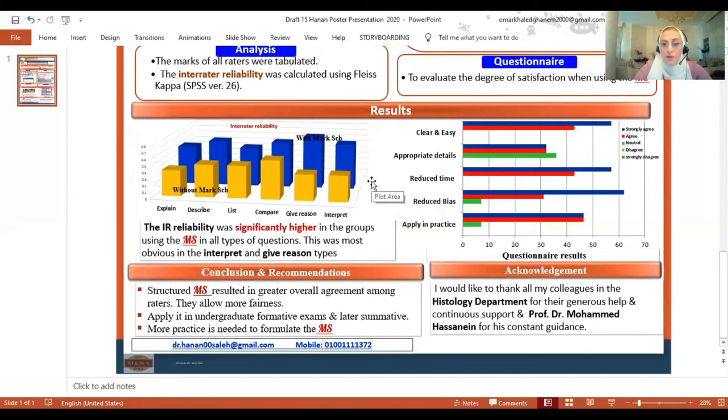As regards the questionnaire, more than 90% of the raters found that the mark scheme was clear and easy and it reduced time in marking, it reduced bias, and they would like to apply it in their practice again. However, nearly 40% of the raters found that they were neutral to the details or to the appropriateness of the details and they thought that it needed more refinement.